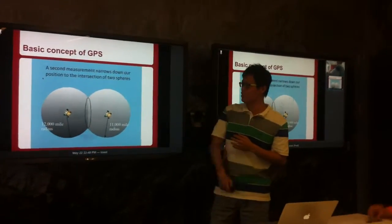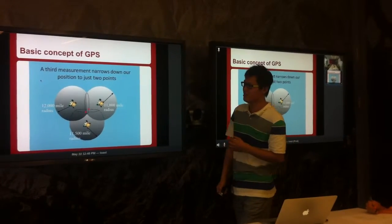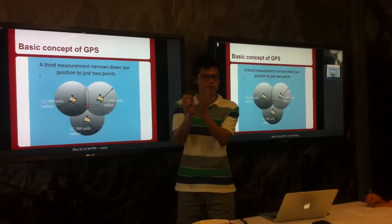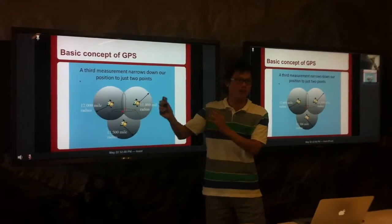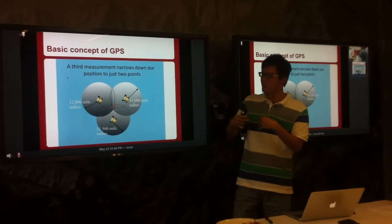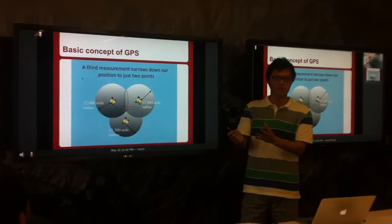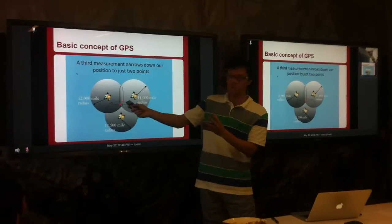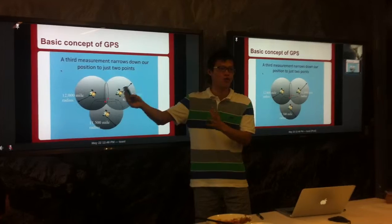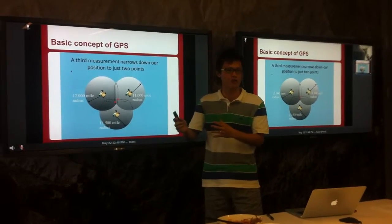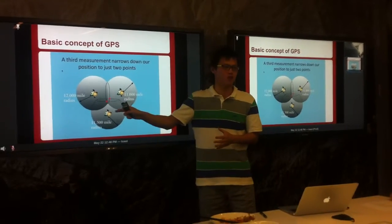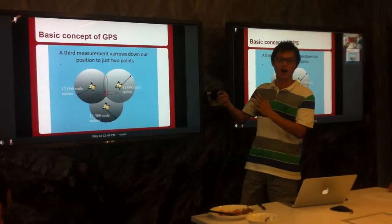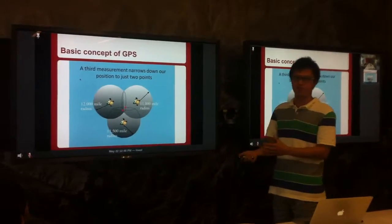Next, when I receive a signal from a third satellite, I narrow down my possible position to two points. So if I can receive messages from three satellites, I can know my location, because one of these points must be very far away from Earth, and we all know we are on the surface of the Earth. So I know one of the points is my location. That's how GPS works.